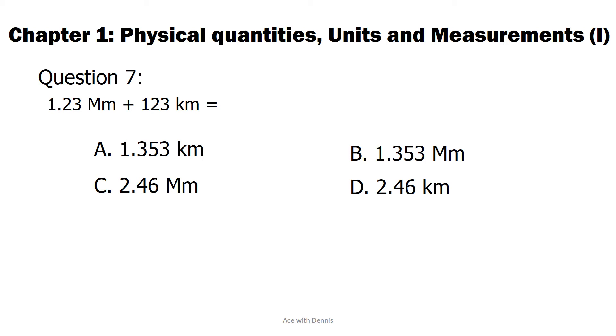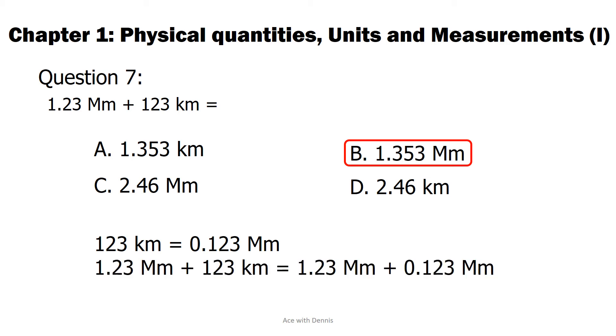The answer is B. 1.353 megameters. 123 kilometers equals 0.123 megameters. 1.23 megameters plus 123 kilometers equals 1.23 megameters plus 0.123 megameters. Hence the answer is 1.353 megameters.